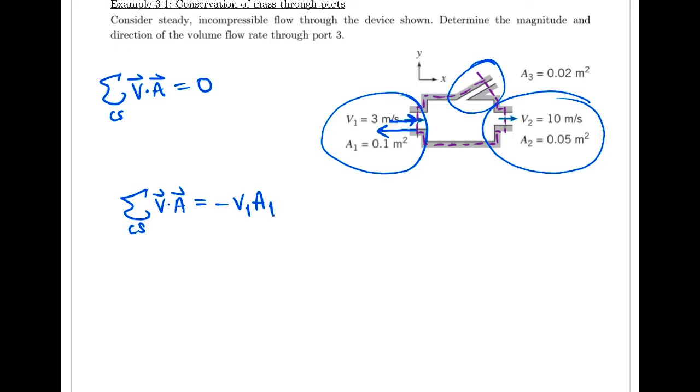Control surface two, that's an outgoing velocity, and the normal vector of the area points outwards as well. So that one's positive. We don't know yet what it is at port three, so it's best if we just assign it a positive value now. That way we know if we calculate it as positive, it's outgoing. But if we find that it's negative, it'll be an incoming.